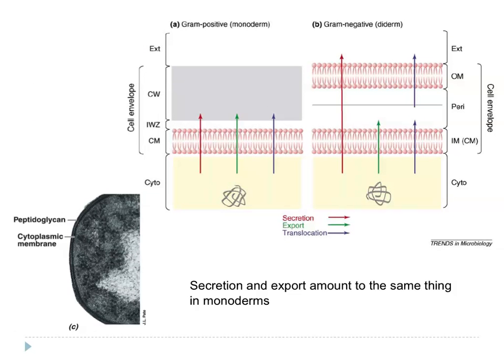In this monoderm, secretion and export amount to the same thing — getting proteins across that one membrane and through the cell wall. The peptidoglycan layer is much thicker in gram-positives than in gram-negatives, and there is no outer membrane, apart from tuberculosis where some people discuss such a thing.